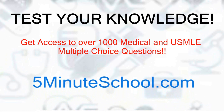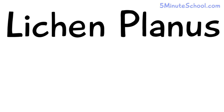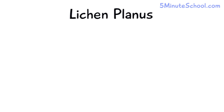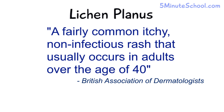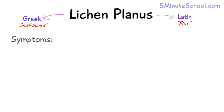In today's video we're going to be talking about lichen planus. According to the British Association of Dermatologists, lichen planus is a fairly common, itchy, non-infectious rash that usually occurs in adults over the age of 40. The word 'lichen' is derived from Greek, meaning small bumps, and 'planus' comes from Latin, meaning flat — so the name originates from the appearance of the disease.